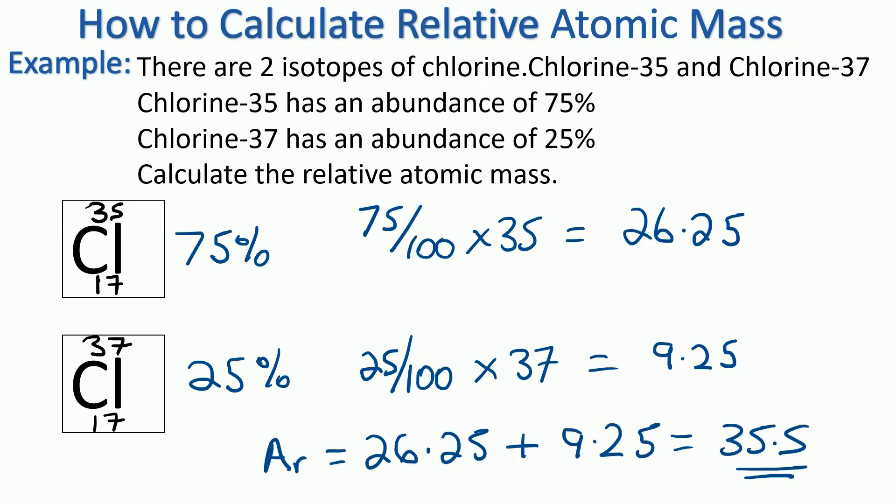And then we simply add these two numbers together. So the relative atomic mass is 26.25 plus 9.25, and that comes to 35.25, which is the number that we see on our periodic table.